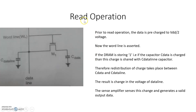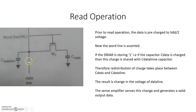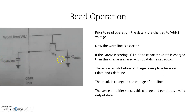To perform the read operation, first we charge the data line to Vdd/2, and then we activate the word line. If we activate the word line, M1 will be on. If a one bit is stored, the voltage on the capacitor C_data is Vdd, while the data line capacitor is at Vdd/2, so redistribution of charge takes place between both capacitors C_data_line and C_data.